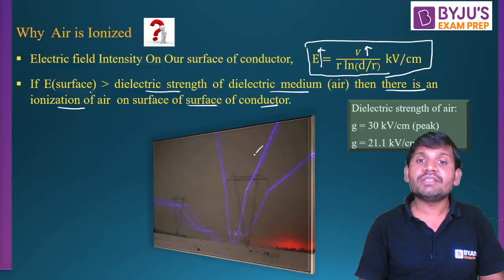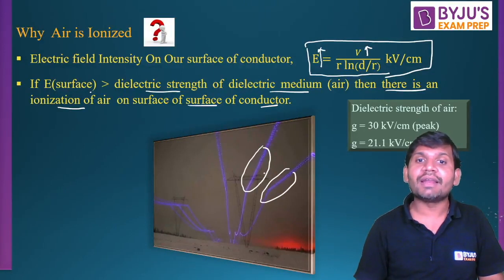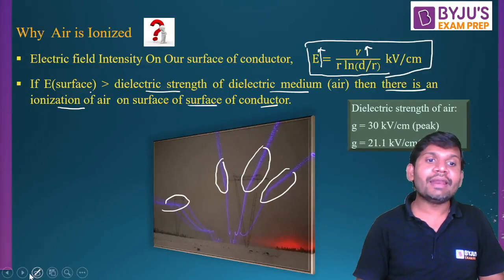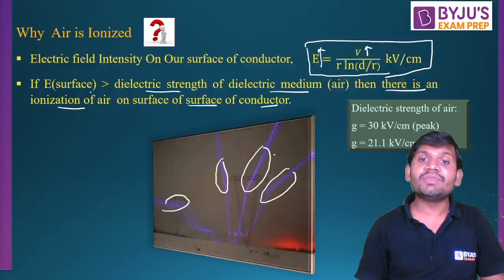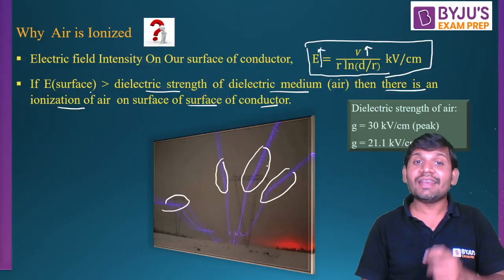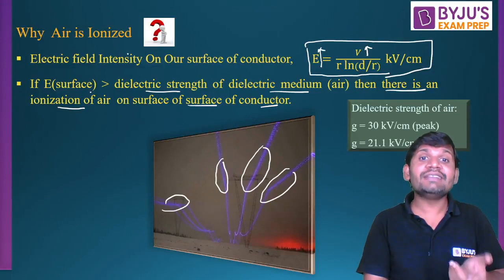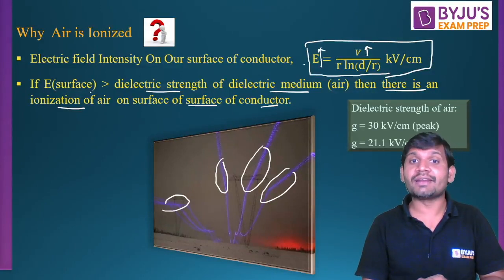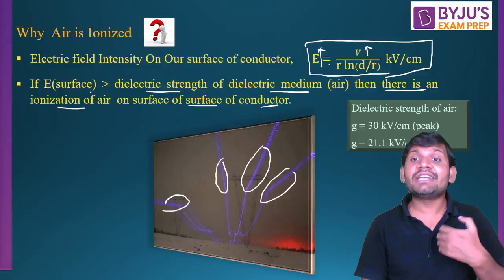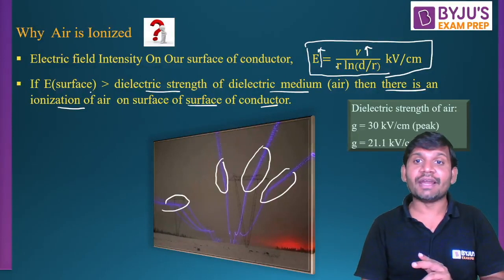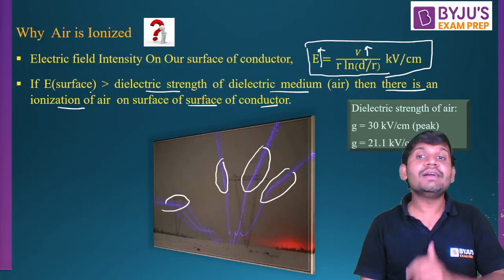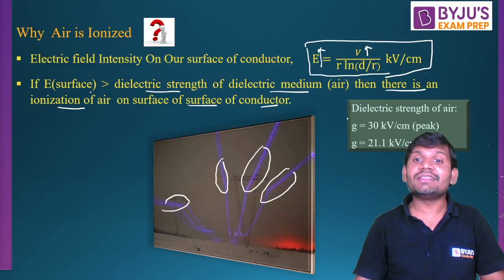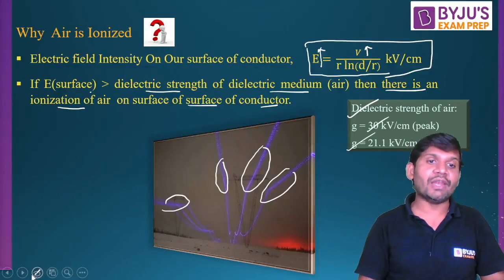Because of the ionization of air on the surface of the conductor, there is a violet glow on the surface of the conductor. This is the reason why the air is ionized — because of the large electric field intensity on the surface of the conductor. You get the large electric field intensity because the lines are operating at high voltage. The dielectric strength of air has a peak value and an RMS value.